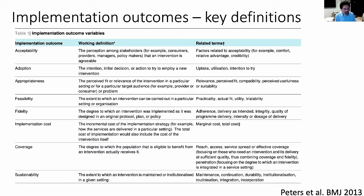Some of these outcomes can be generated through routine data. If you're implementing some kind of new policy and you see that at the provider level people are not adhering to it, and there's very low compliance by providers, you can get at things like acceptability and feasibility. But for the most part it's going to involve some different data collection than you're used to doing, and some resources to go with it.